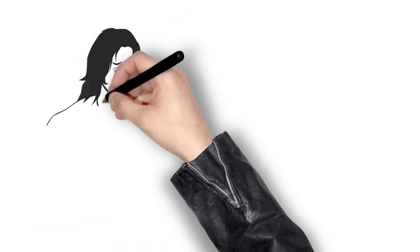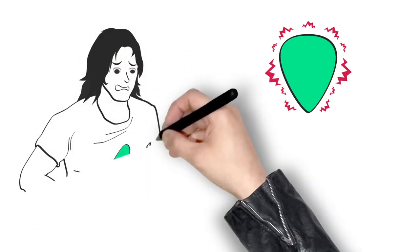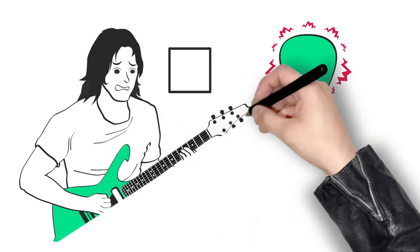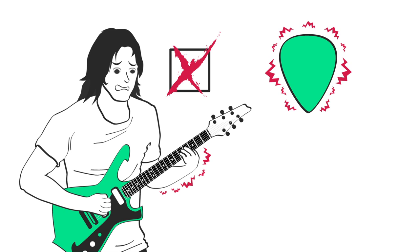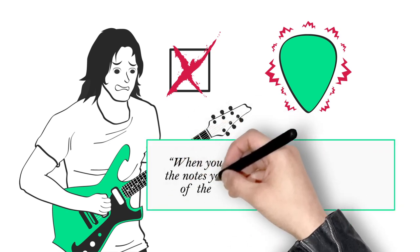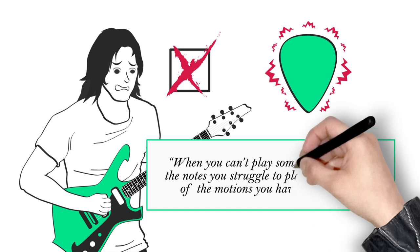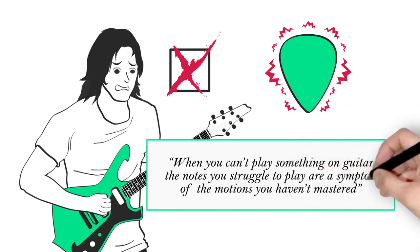So when you can't play something on guitar, it simply means there are motions you haven't yet mastered. Now stop. Let all of that sink in for a second. I'm going to repeat that because it's so important. When you can't play something on guitar, the notes you struggle with are a symptom of the motions you haven't yet mastered.